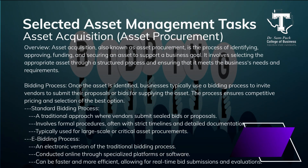Now let's dive into asset acquisition, also known as asset procurement. Asset acquisition starts with identifying and securing an asset that aligns with a business goal. Once you've pinpointed what you need and got the green light to move forward, most organizations will use a bidding process to find the right vendor. There are two main types: the standard bidding process, where vendors submit proposals in response to a request for bids, and the e-bidding process, where bidding happens online, which can streamline the process and make it easier to manage.